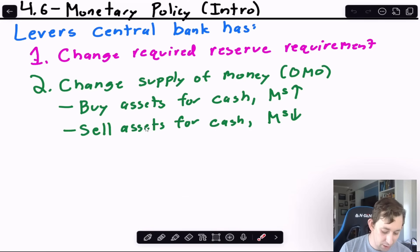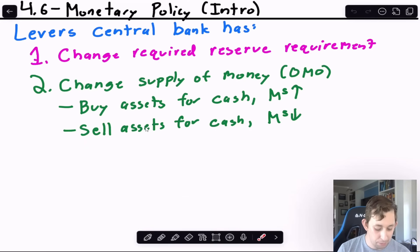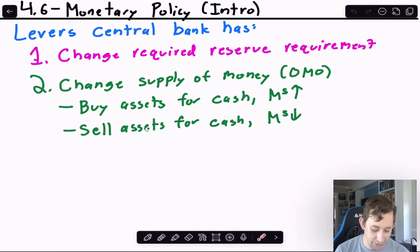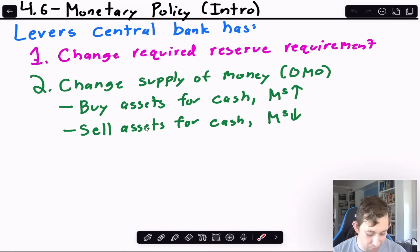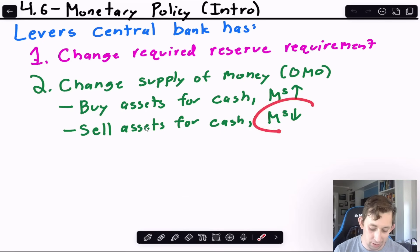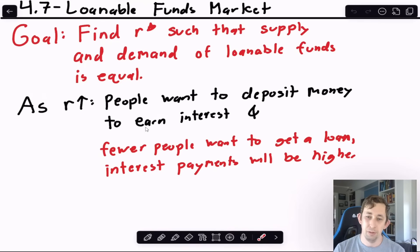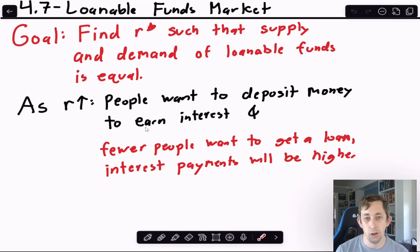Conversely, the Fed can sell assets back to the public. The public hands over cash, and the Fed effectively takes that money out of circulation, reducing the money supply. So buying assets expands the money supply; selling assets contracts it.